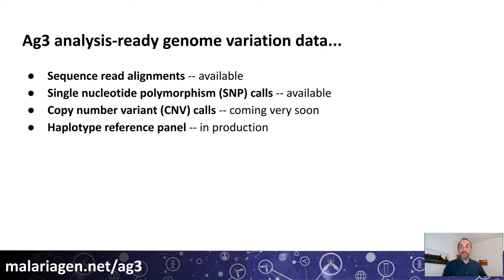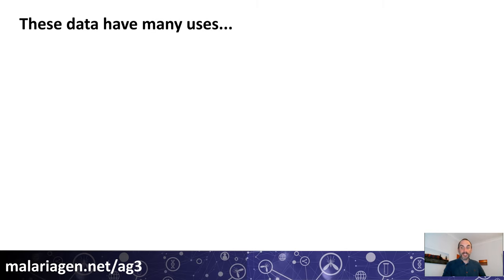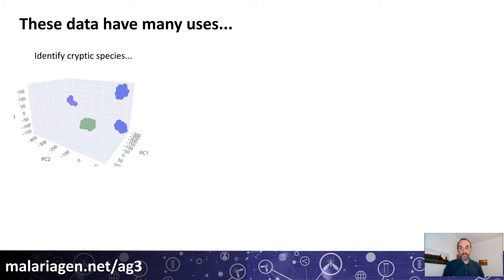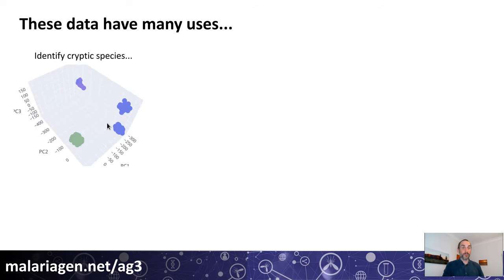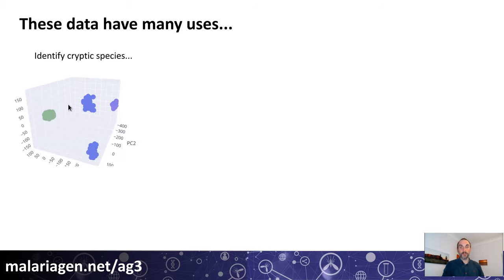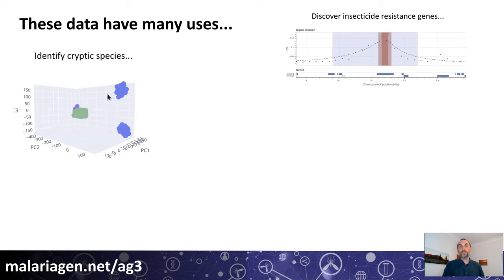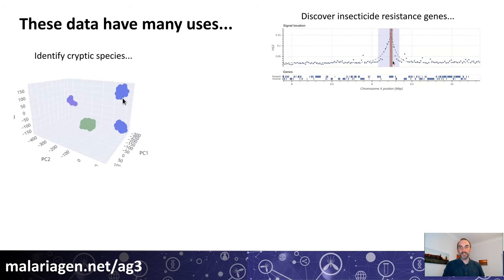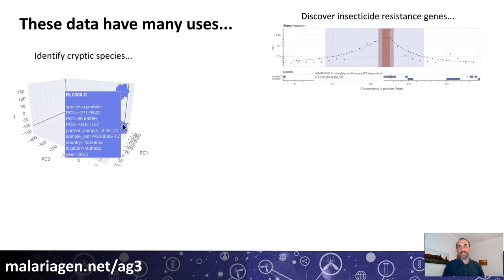There are many things you could do with these data. Just to give you a couple of examples: you could investigate population structure and identify cryptic species, or you could perform genome-wide selection scans and discover candidate insecticide resistance genes.